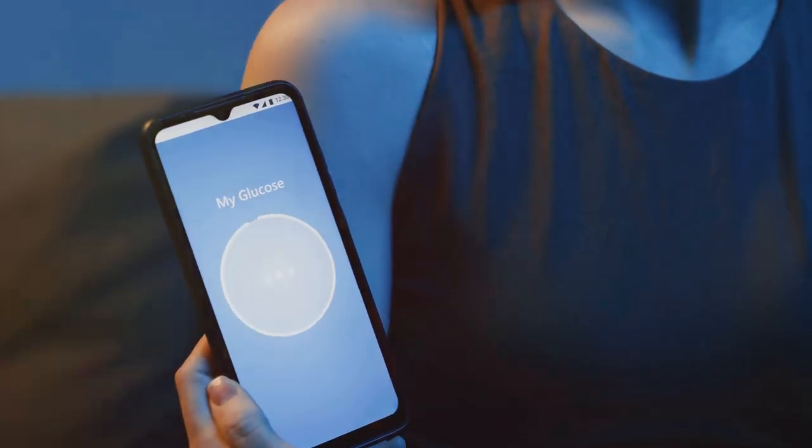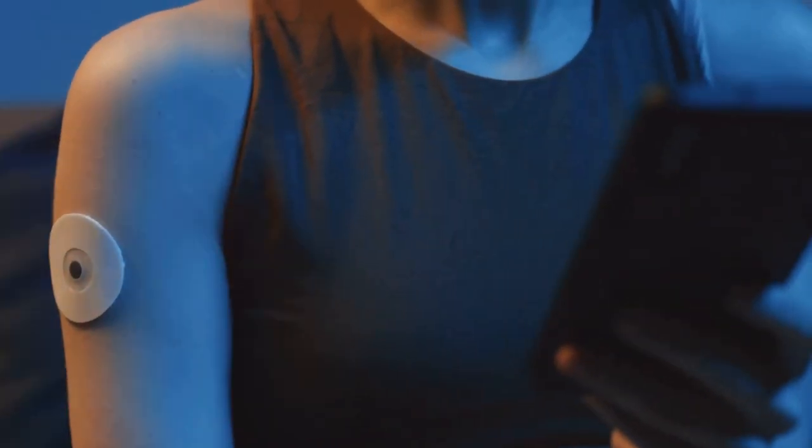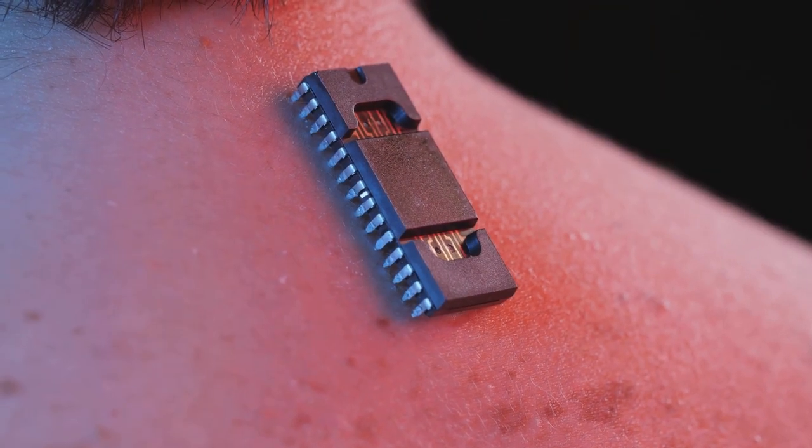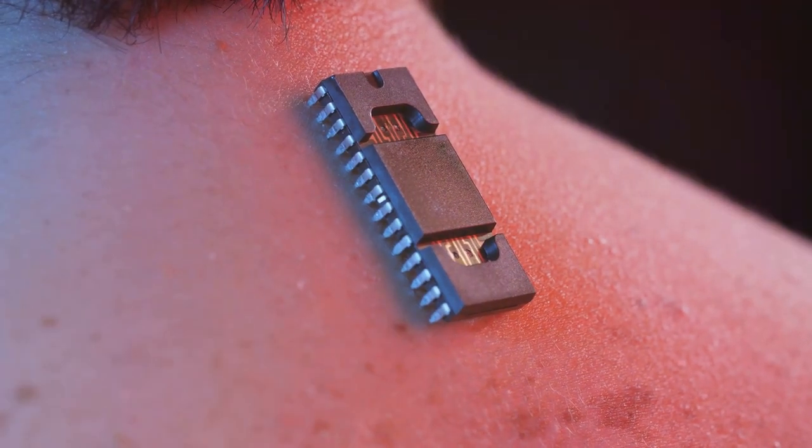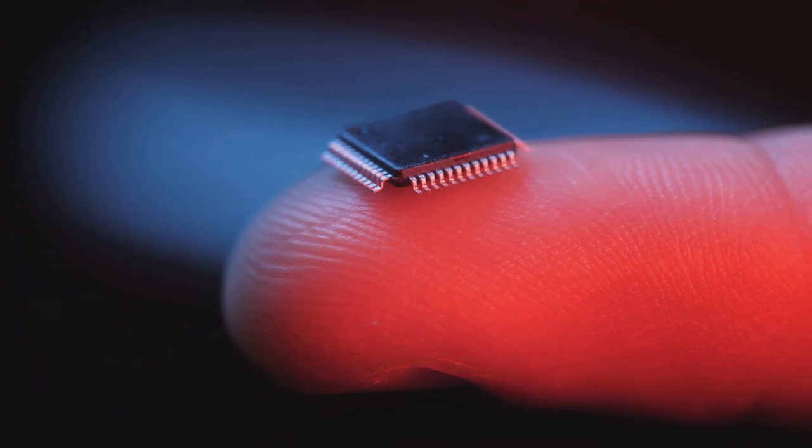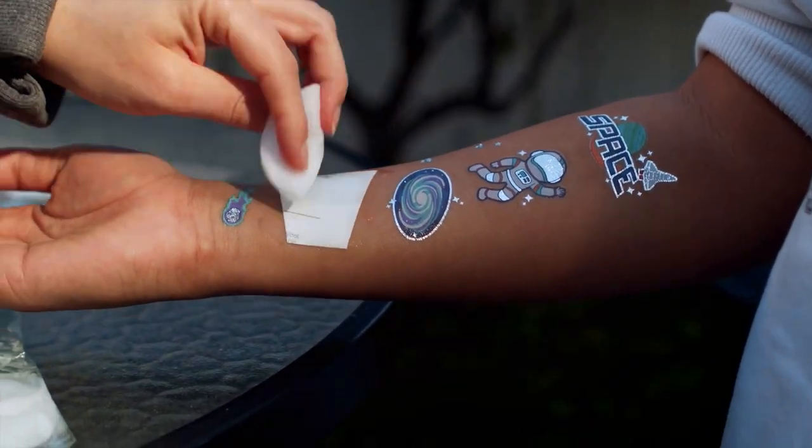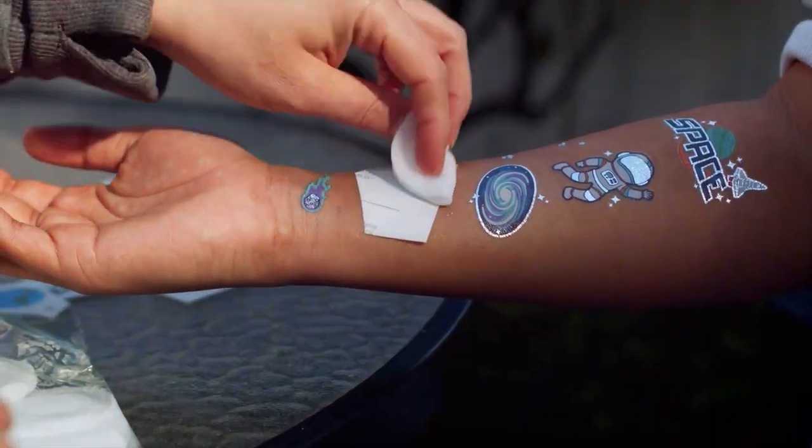Beneath the surface: unveiling the magic of smart tattoos. Smart tattoos may seem like science fiction, but the technology is very real. At their core, they consist of tiny biocompatible electronic circuits and sensors. These are often thinner than a human hair, applied directly to the skin like a temporary tattoo.